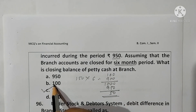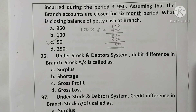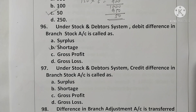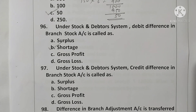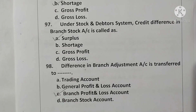Question 96: Under the stock and debtor system, a debit difference in a branch stock account is called a shortage. Option B is correct. Question 97: Under the stock and debtor system, a credit difference in a branch stock account is called a surplus. Option A is correct. Question 98: The difference in the branch adjustment account is transferred to the branch profit and loss account. Option C is correct.